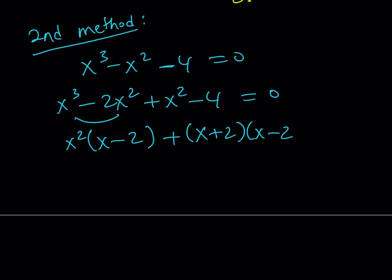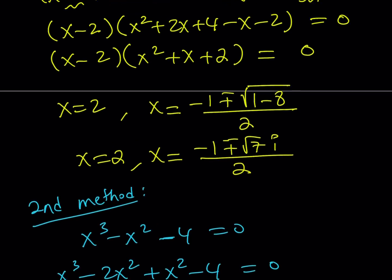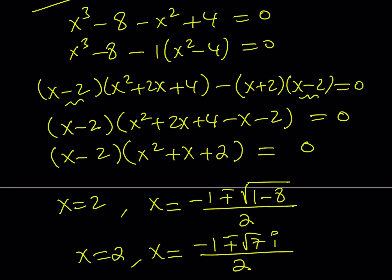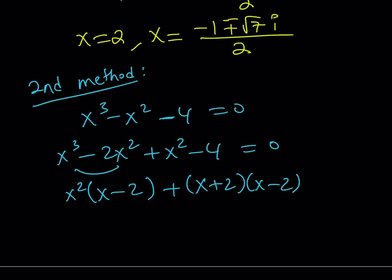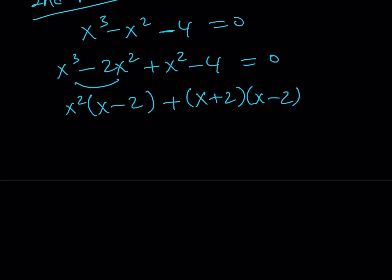The same difference of two squares came up in both methods, but notice that the first one had a minus sign in front of it. That's why they are different. Okay, great. Now, x minus 2, again, is a common factor. That shouldn't be a surprise, right?